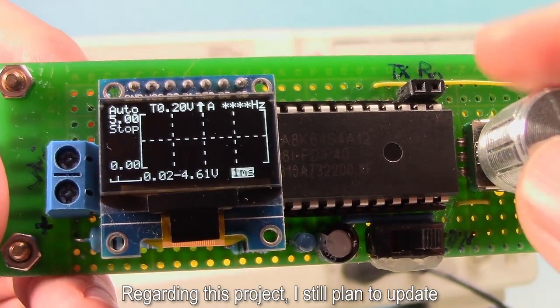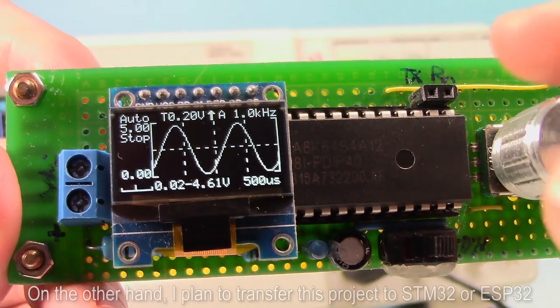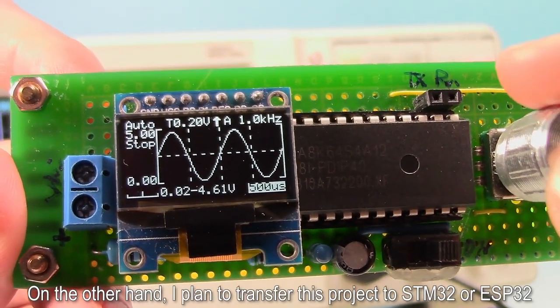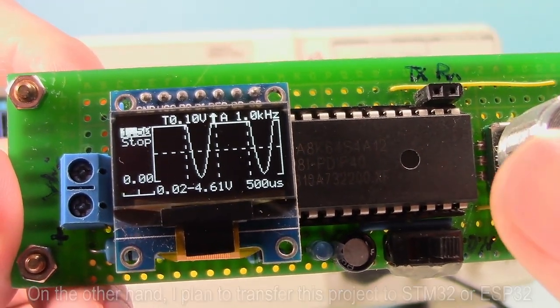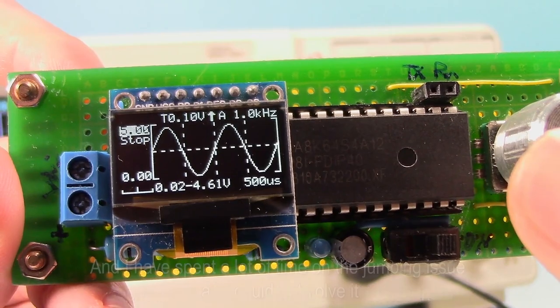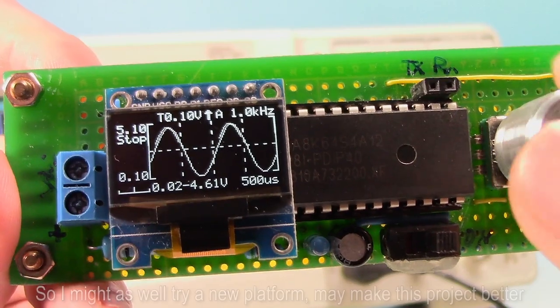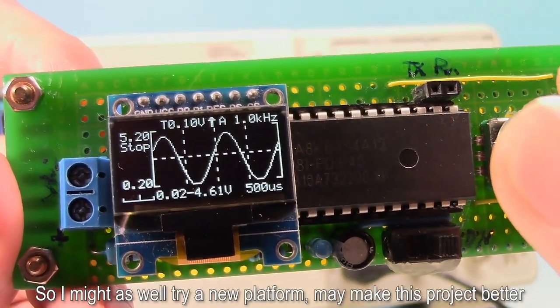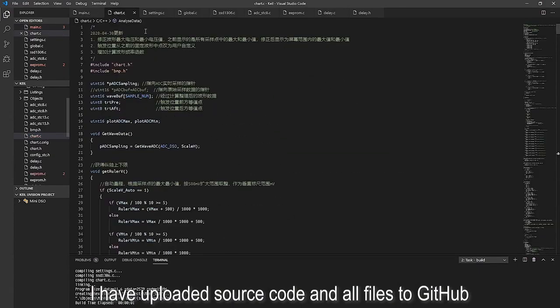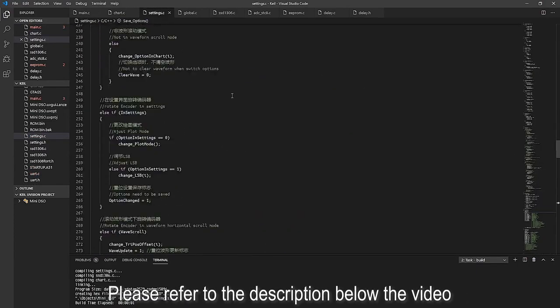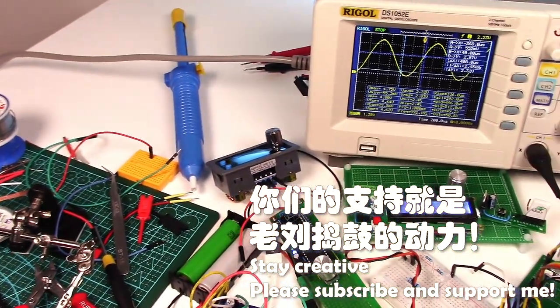Regarding this project, I still plan to update. On the one hand, optimizing the function. On the other hand, I plan to transfer this project to STM32 or ESP32. Because I know many people tend to use them, and I have spent a lot of time on the jumping issue and could not solve it. So I might as well try a new platform, may make this project better. I have uploaded source code and all files to GitHub. Please refer to the description below the video. Hope you liked this project, and see you next time!